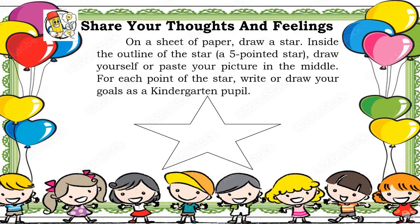And now for your last activity, you are going to share your thoughts and feelings. On a sheet of paper, you are going to draw a star — a five-pointed star. Draw yourself or paste your picture in the middle. For each point of the star, write or draw your goals as a kindergarten pupil.